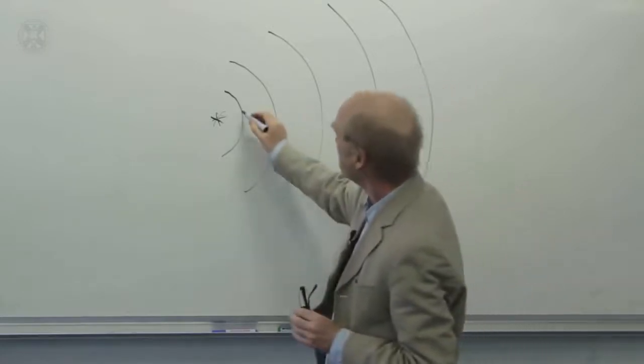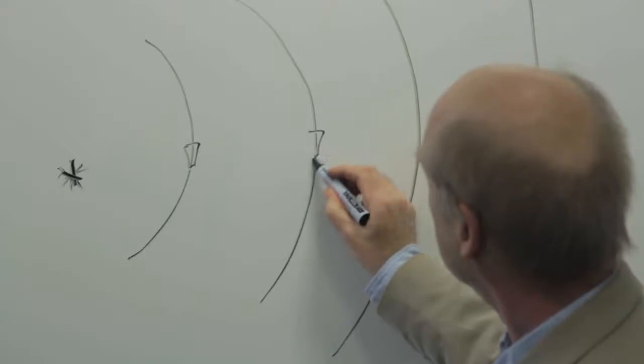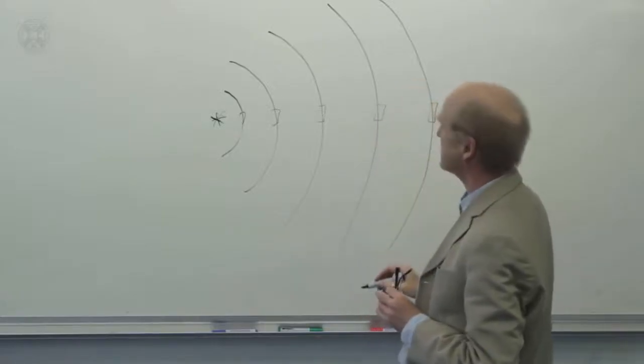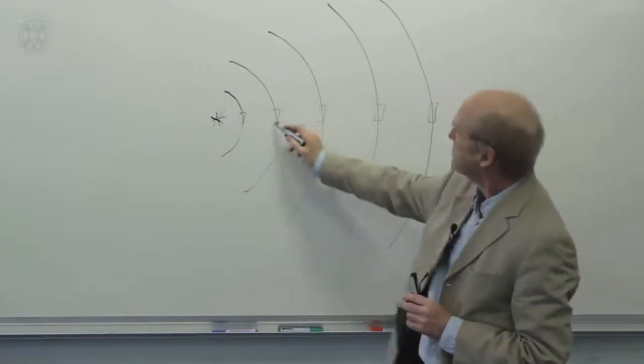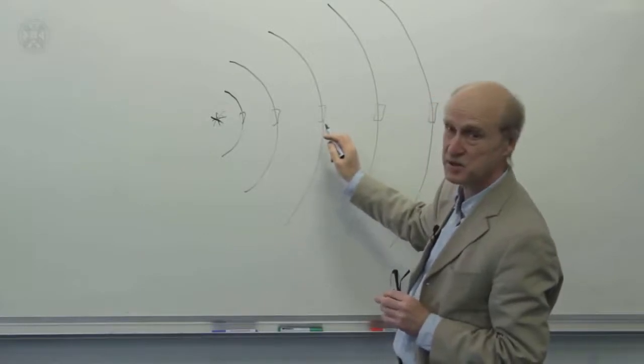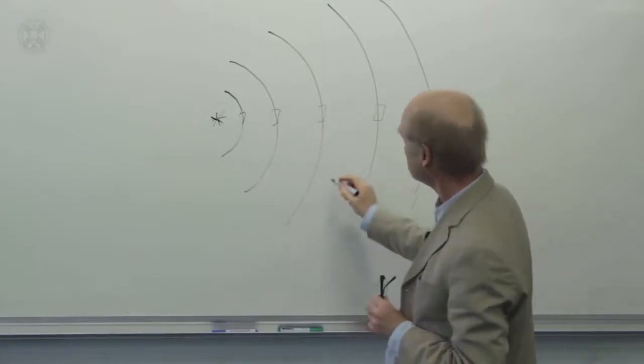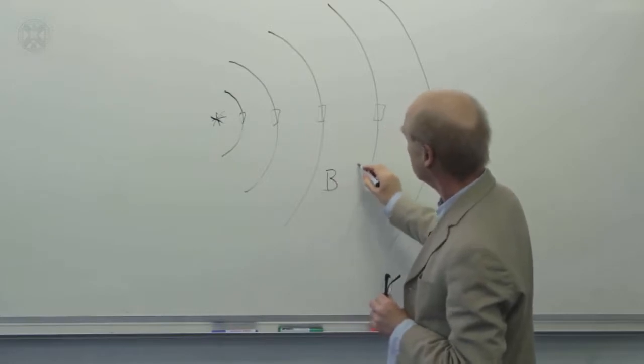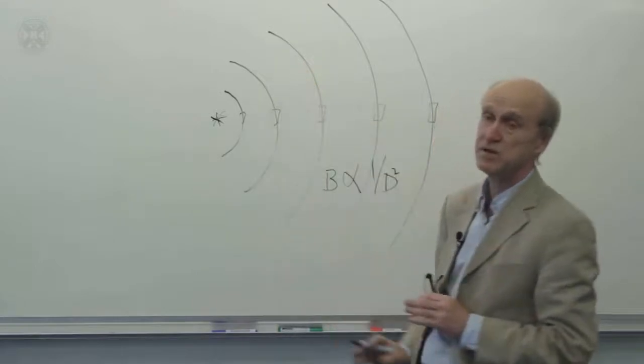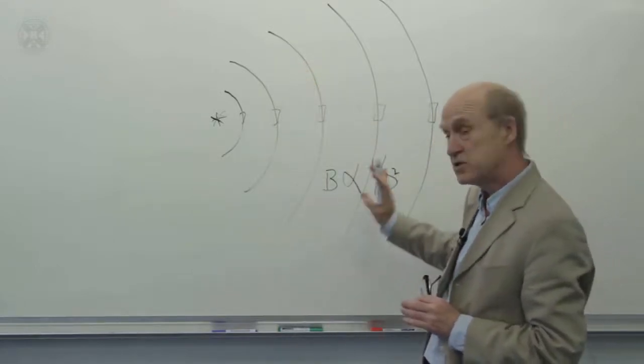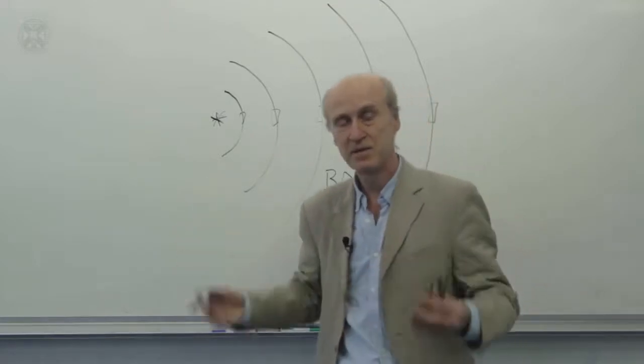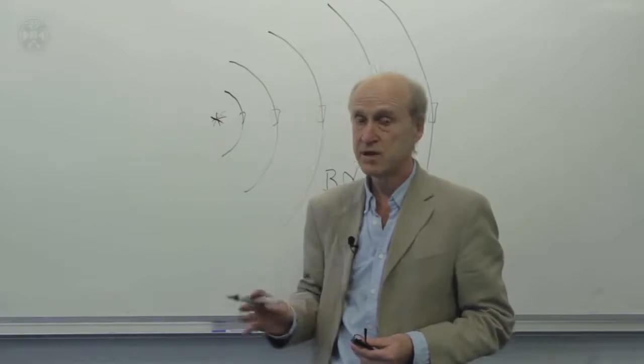So now imagine putting a detector of the same size at lots of different distances. So as you go further away, the fraction of the overall light that this is catching is getting smaller. So the apparent brightness of an object is going to depend as one over the square of the distance because it depends on the total surface area of that sphere. So if an object is 100 times further away, it's going to be 10,000 times fainter. So that's a problem.